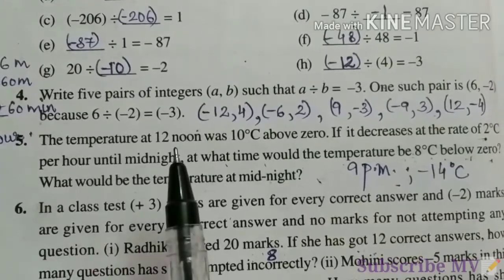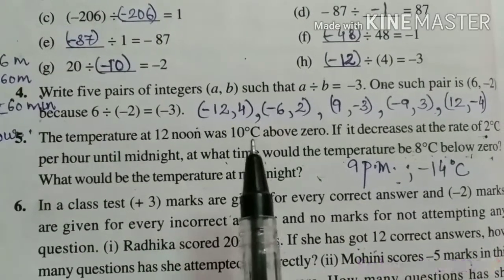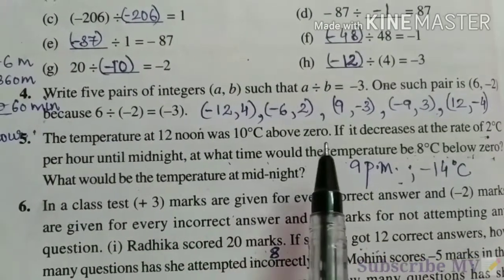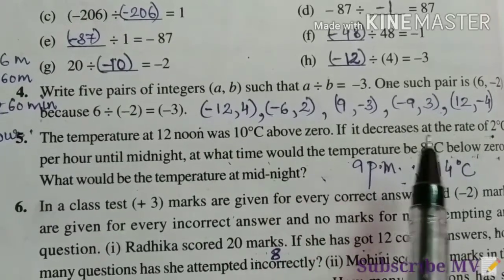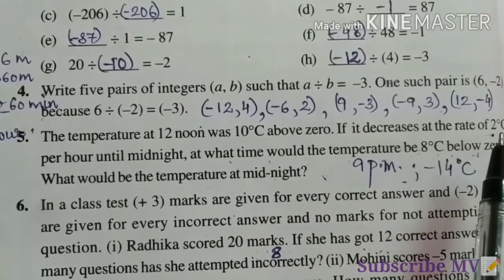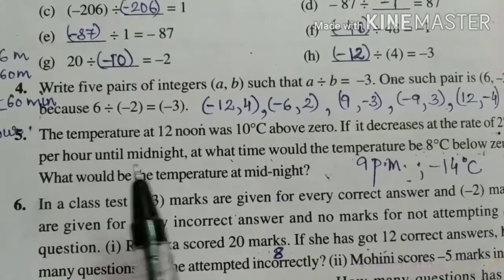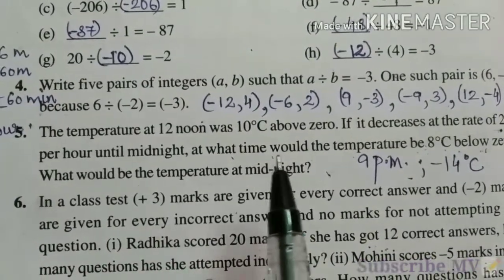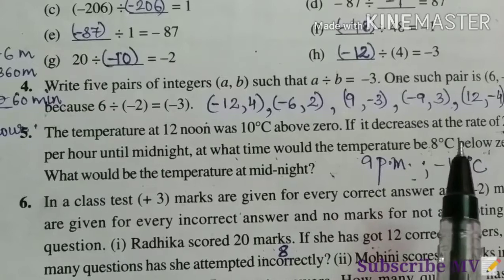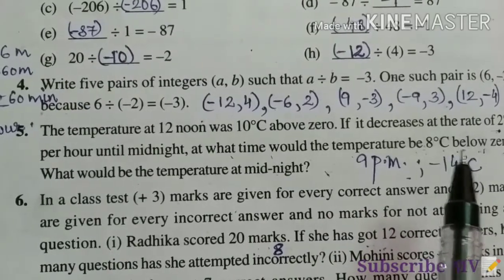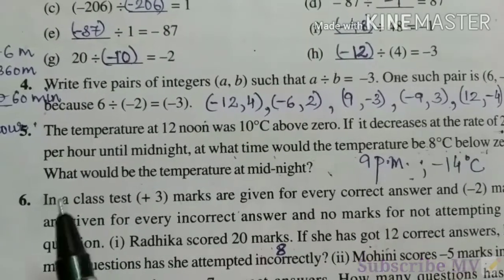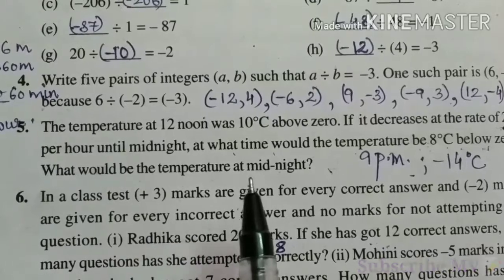The temperature at 12 noon was 10 degree Celsius above 0. If it decreases at the rate of 2 degree Celsius per hour until midnight, at what time would the temperature be 8 degree Celsius below 0? What would be the temperature at midnight?